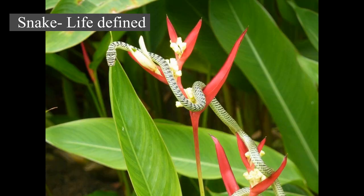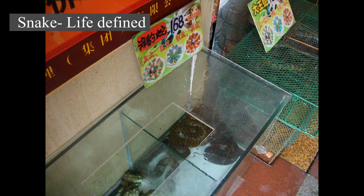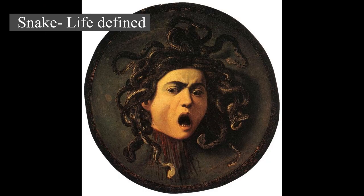Around 30 families are currently recognized, comprising about 520 genera and about 3,900 species. They range in size from the tiny 10.4 cm long Barbados threadsnake to the reticulated python of 6.95 meters in length. The fossil species Titanoboa cerrejonensis was 12.8 meters long.